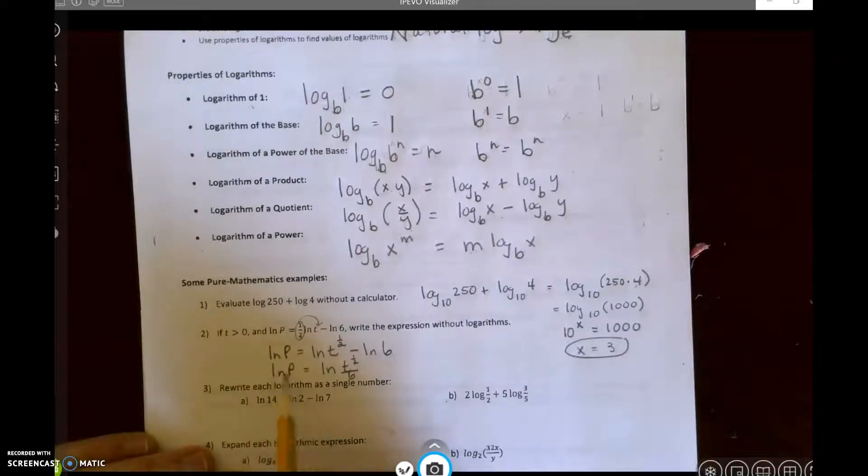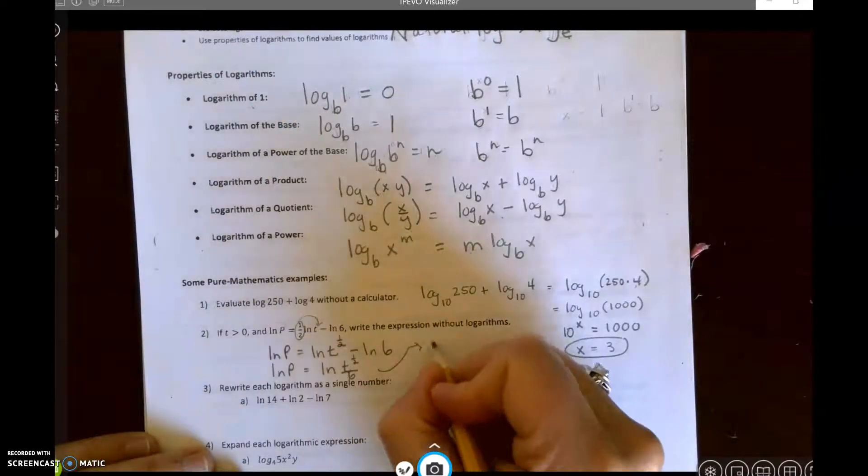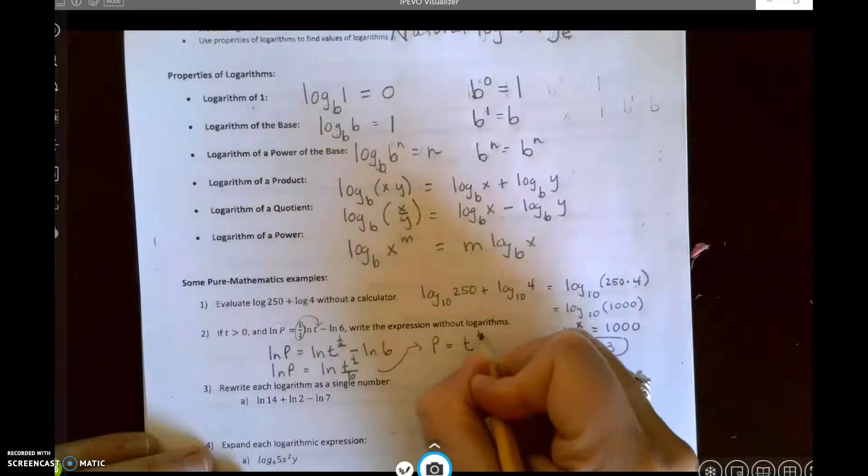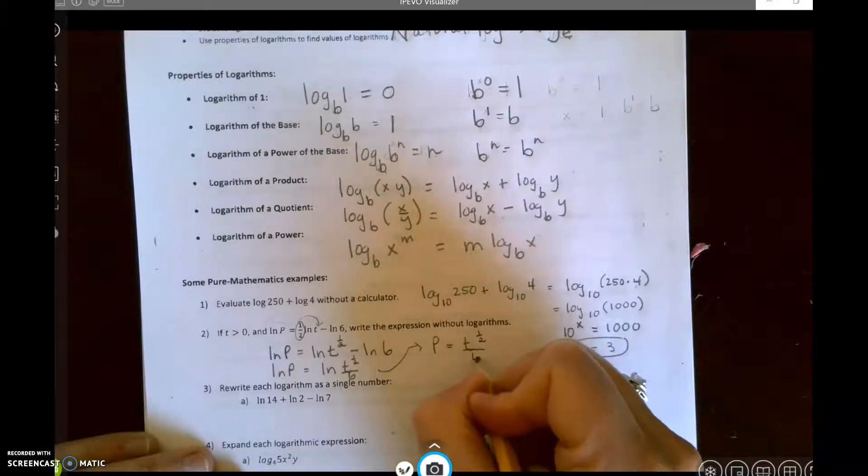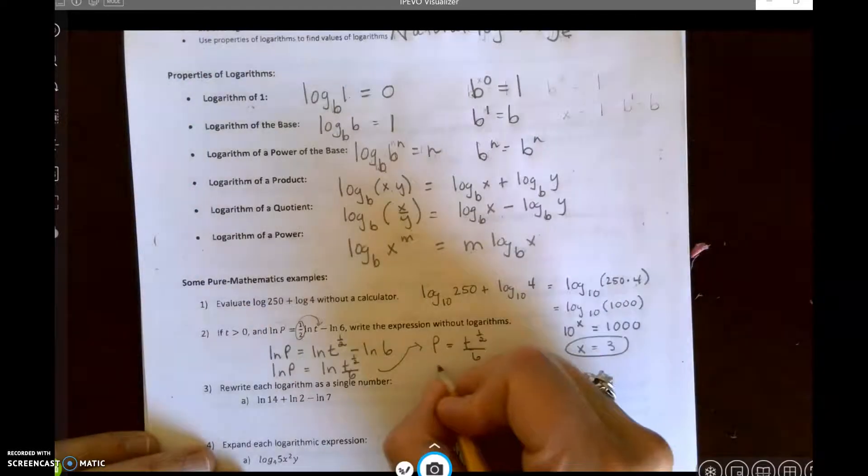So I have the natural log of p equals the natural log of t to the one-half divided by 6.